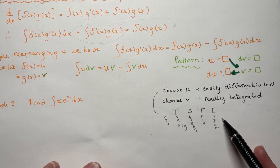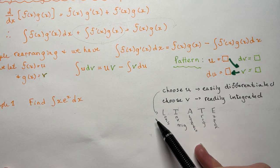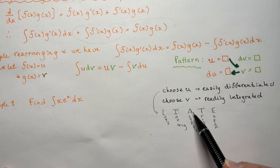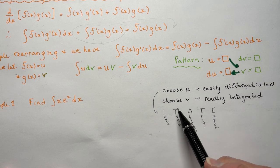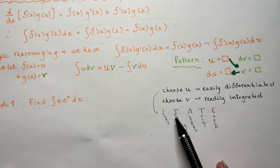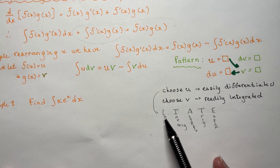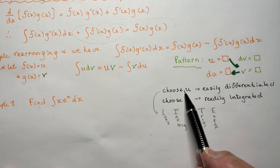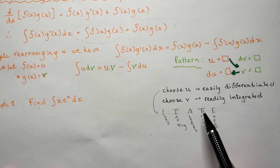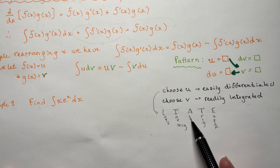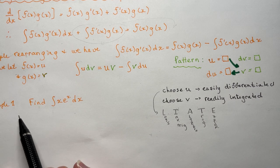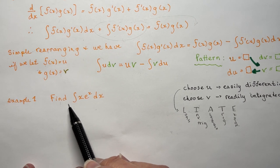A rule that you can use to help you is the LIATE rule. We're going to pick u to be a Logarithm, an Inverse trig, then Algebraic, Trig, or Exponential. So let's go to this first example, and this is going to help make everything very clear.